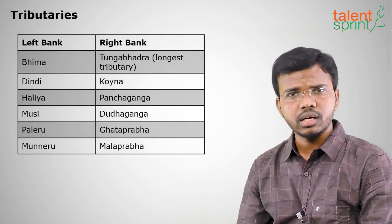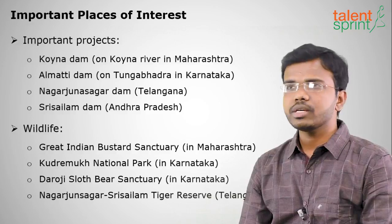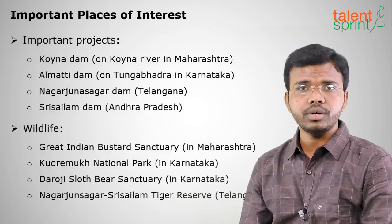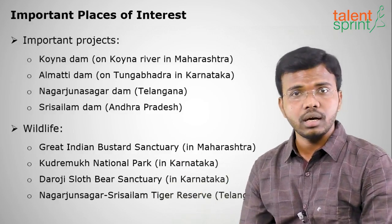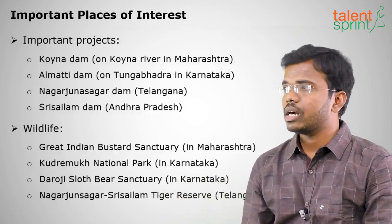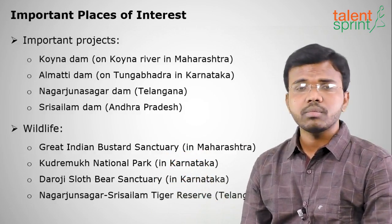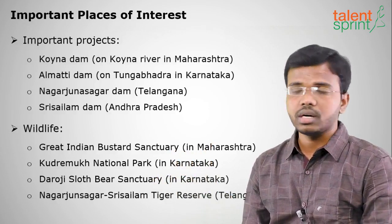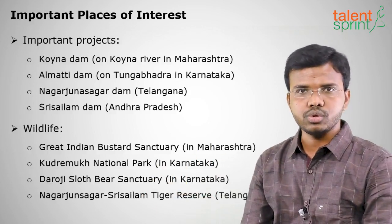Other right bank tributaries of the Krishna are Koina, Panchaganga, Ghataprabha, Malaprabha, and Dudhaganga. Important projects include the Koina Dam in Maharashtra, Almati Dam on the Tungabhadra, Nagarjunasagar Dam in Telangana, and Srisailam Dam in Andhra Pradesh. Wildlife areas include the Great Indian Bustard Sanctuary in Maharashtra, Kudremukh National Park in Karnataka, Daroji Sloth Bear Sanctuary in Karnataka, and the Nagarjunasagar Tiger Reserve, partly in Telangana and partly in Andhra Pradesh.